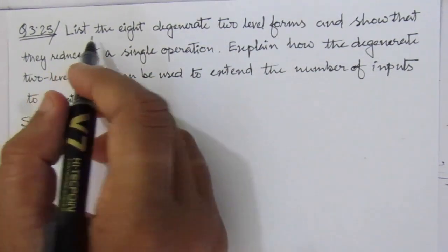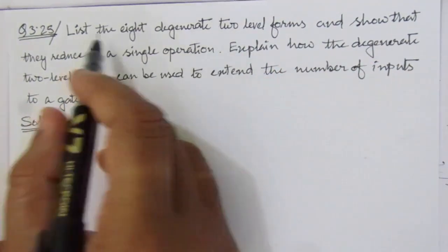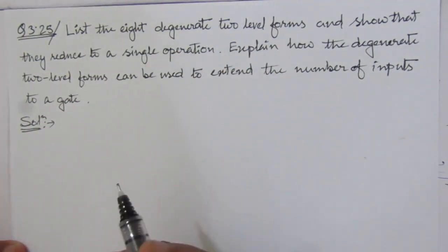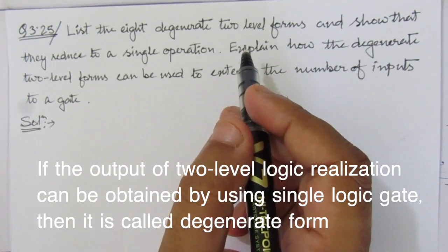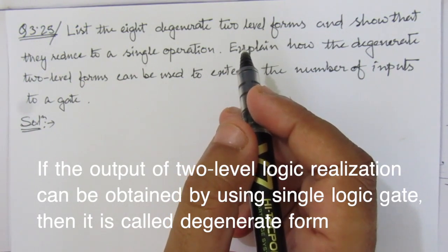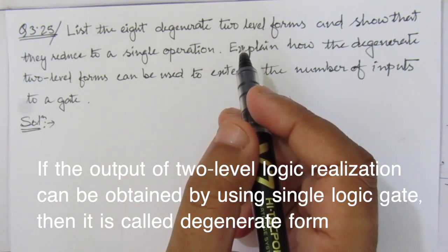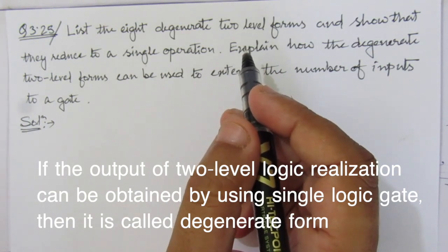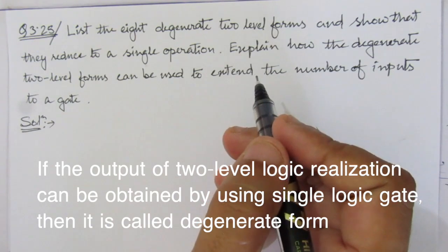The problem is to list the 8 degenerate 2-level forms so that they reduce to a single operation. The degenerate form means if the output of a 2-level logic realization can be obtained by using a single logic gate, then it is called a degenerate form. If the 2-level logic can be minimized to a single gate representation, that 2-level form is called the degenerate form.